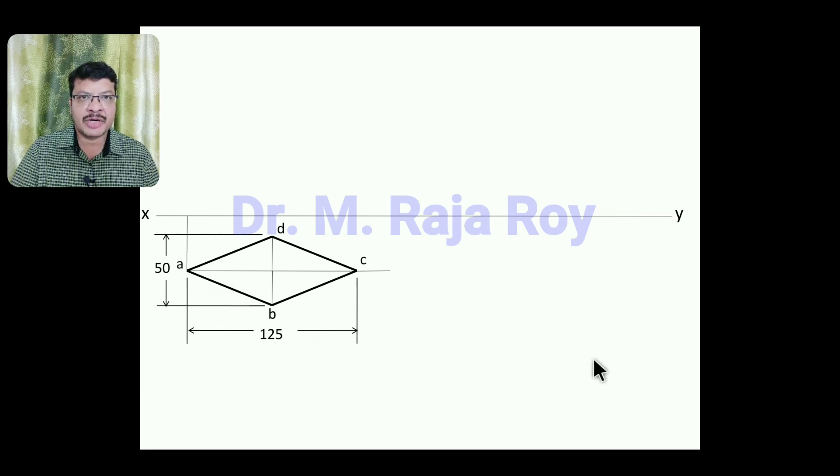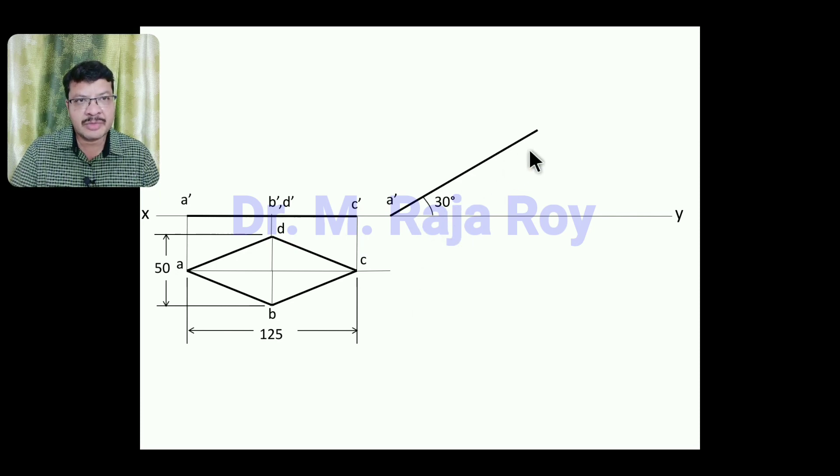Then project the front view. Here, you will get A', this is B', D', this is C'. Then in the second stage, somewhere here, you take A' and draw this particular line at an inclination of 30 degrees. Because this longer diagonal inclination is nothing but the surface inclination. So that's why this surface inclination I am representing in the second stage, 30 degrees.